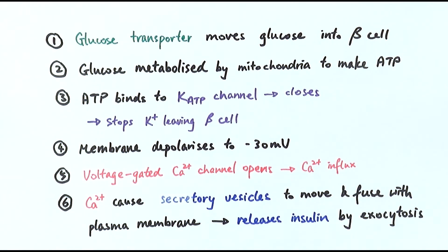To summarize: in the case of a high blood glucose level, the glucose transporter on the beta cell moves glucose into the beta cell. The glucose is then metabolized by the mitochondria through aerobic respiration to make ATP. The increased level of ATP inside the beta cell causes ATP to bind to the potassium ion channels, closing them and stopping potassium ions from leaving the cell. This causes the membrane to depolarize from minus 70 to minus 30 millivolts.